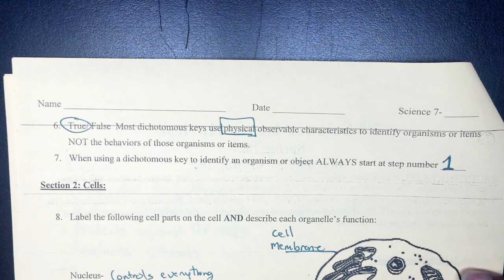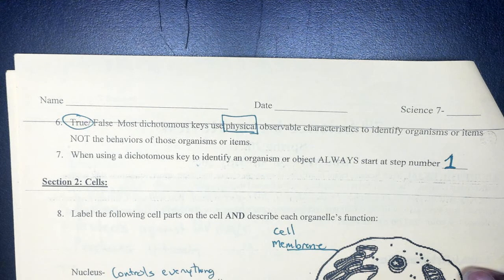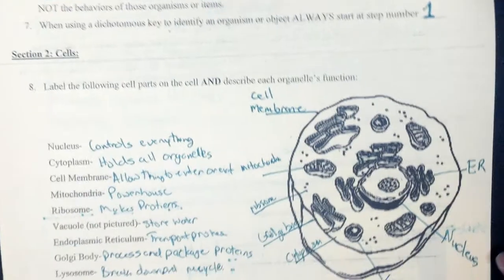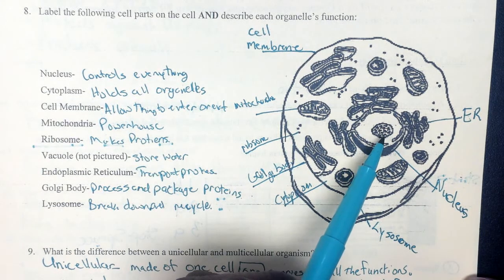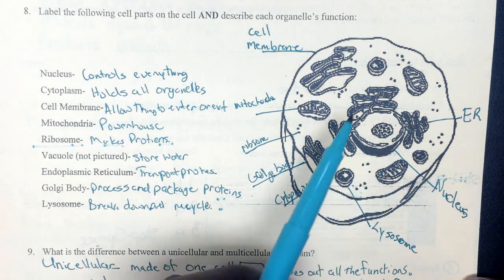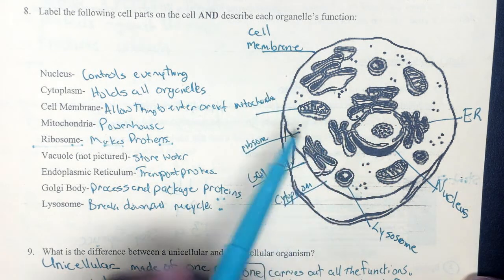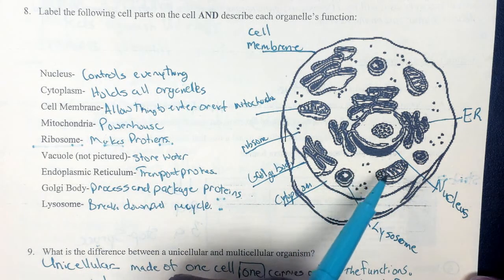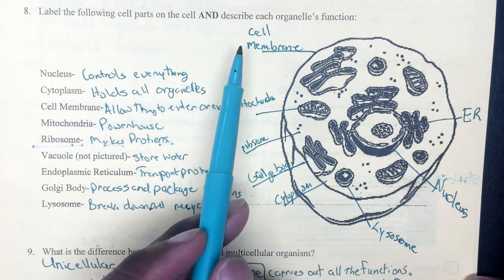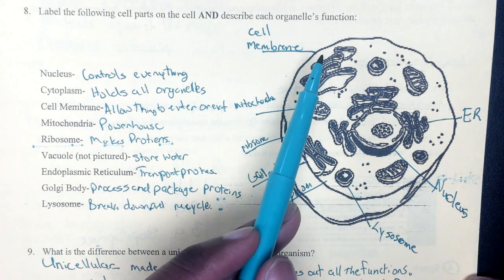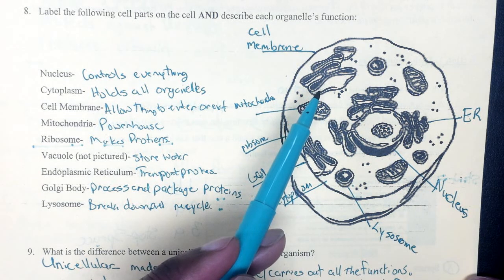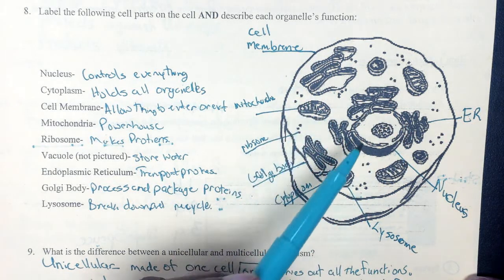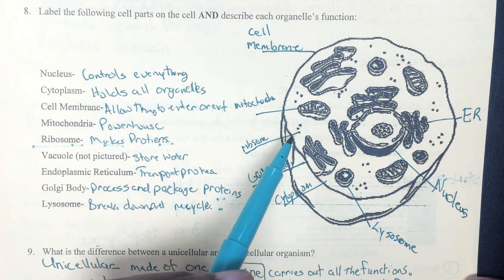Section 2 is about cells. The first thing is labeling cell parts and describing them. The nucleus is found in the center; it controls everything and all the organelles within the cell. The cytoplasm is the jelly-like material that holds all the organelles — they sit in it like jello. The cell membrane allows things to enter or exit the cell. The mitochondria is the powerhouse of the cell. The dots represent ribosomes, which make our proteins.